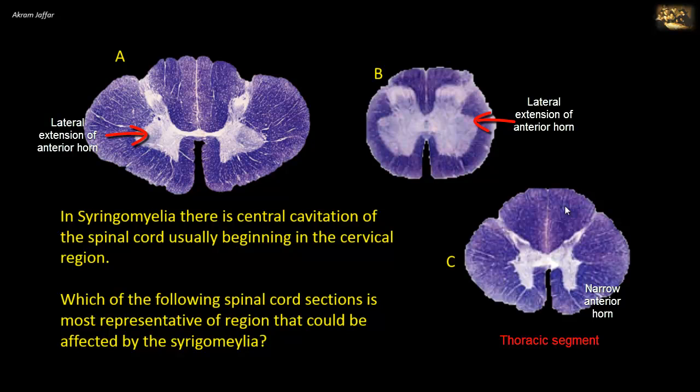In the thoracic section, like in C, there is a relatively small amount of gray matter in the anterior horn because there are no limbs here. The anterior horn cells are only concerned with supplying the muscles of the trunk.